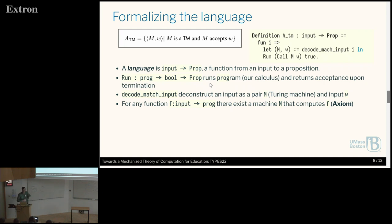One very important thing to note is that this work uses classical logic, although it uses Coq as the proof script. A language is just a function from an unspecified input to a proposition. Run is as I showed. There is also the notion of encoding a Turing machine as an input and vice versa. We also rely heavily on an axiom that given a function from input to program, you can find a Turing machine that recognizes it.